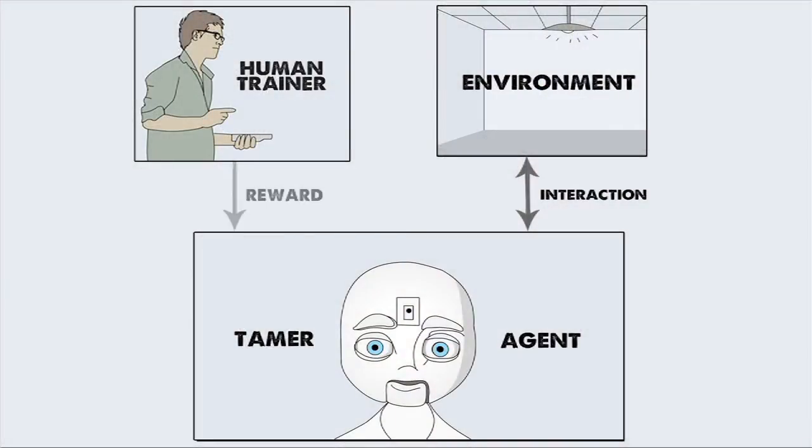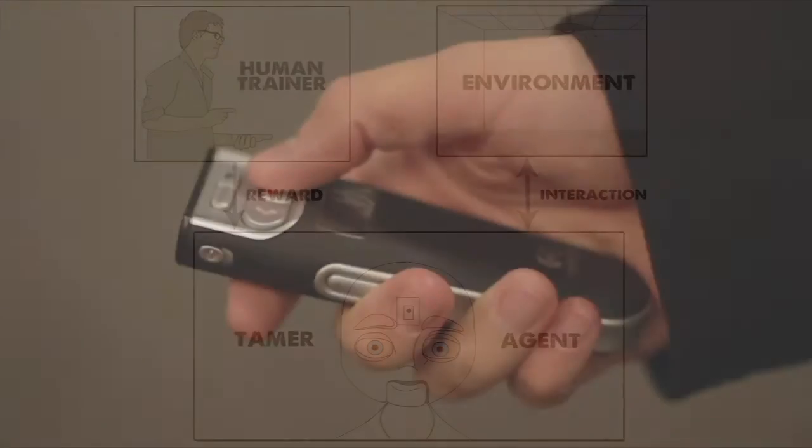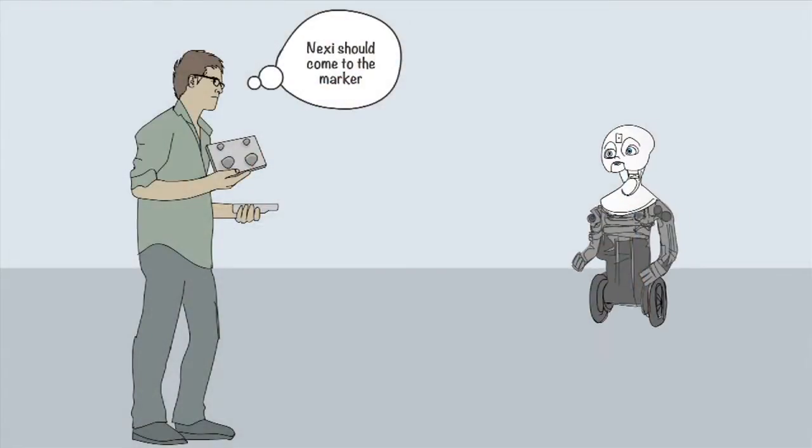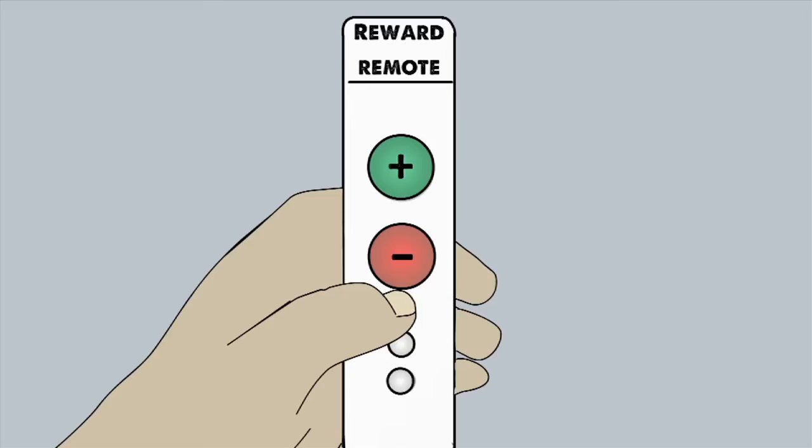As the agent acts, positive and negative reward is given with inherent delay by a human trainer, here via a handheld remote. Over time, the agent learns to take actions that will get it the most positive reward.